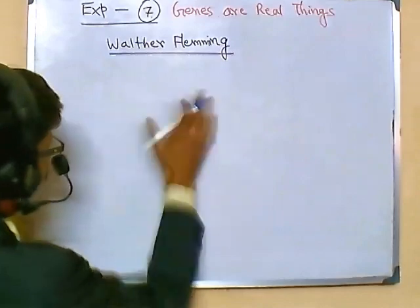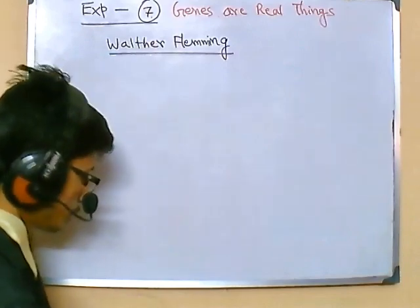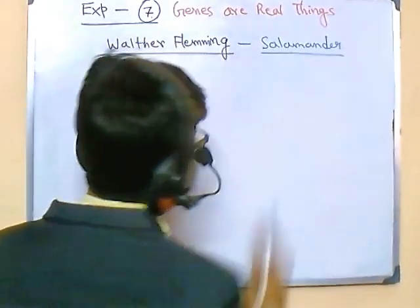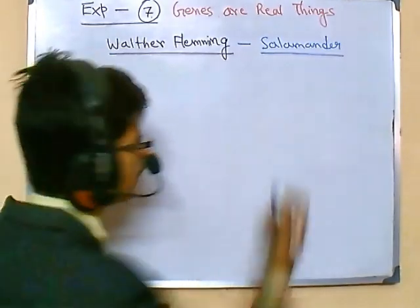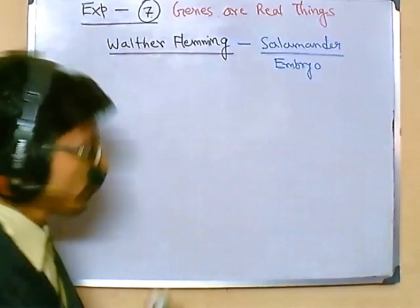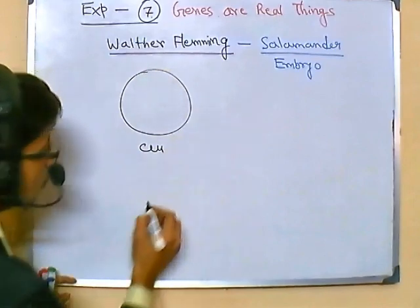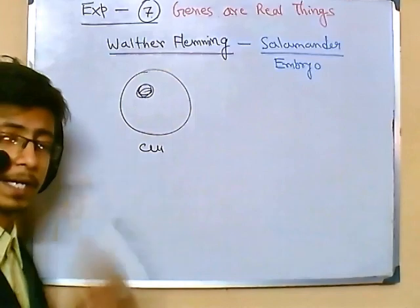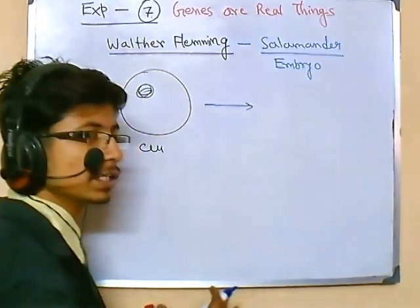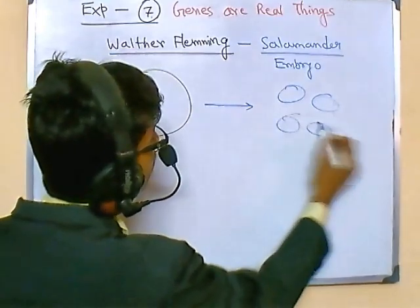Walter Fleming actually used the salamander as his model organism. Salamander was pretty common at that time and people were using salamander embryos for studying different things. He took one cell of a salamander embryo — it was having that dark dot, whatever was discovered by Theodore Schwann — and after a certain amount of time, he found the number of cells had increased.